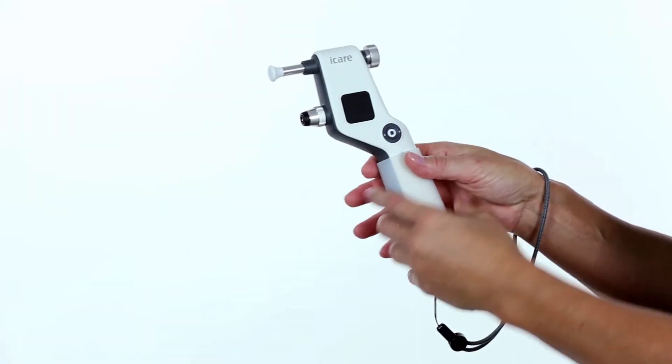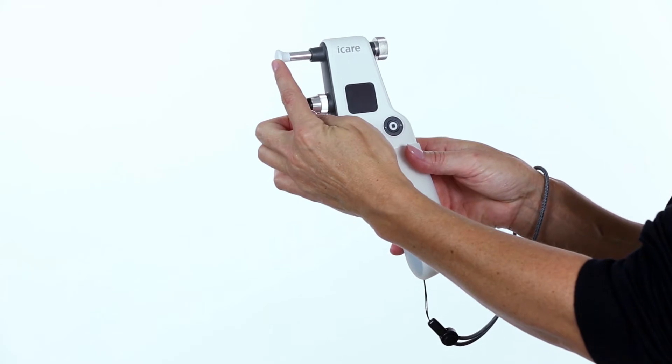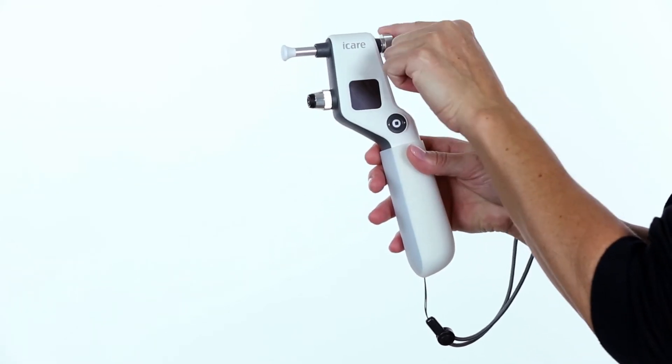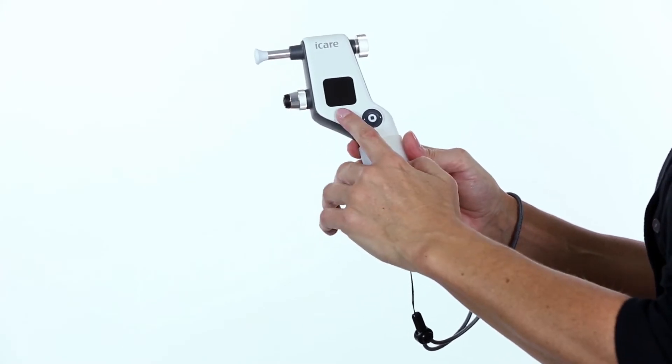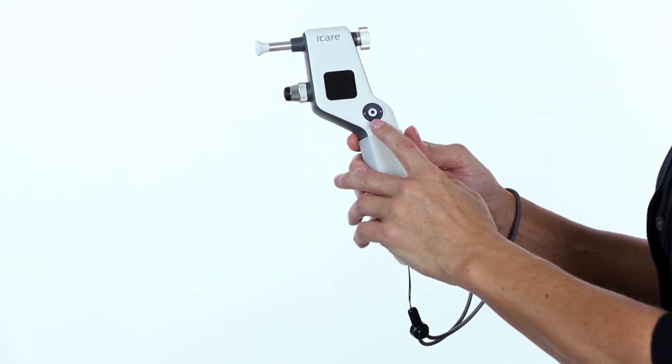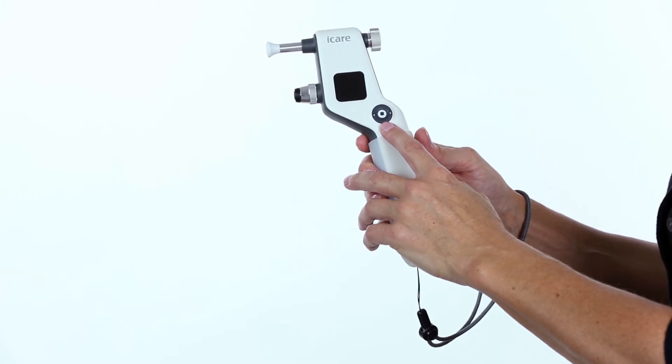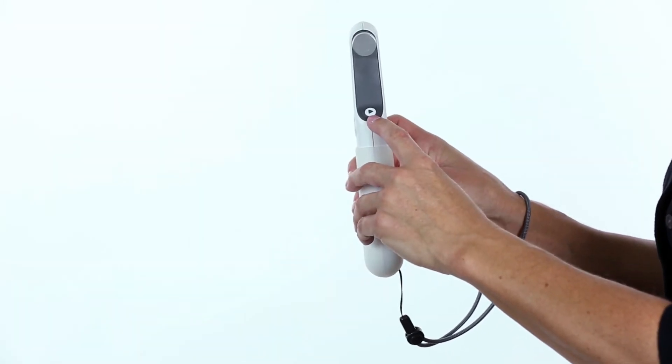Parts of the IC-100: This is the forehead support, forehead support adjusting wheel, probe base and collar, display, select navigation button, and the measure button.